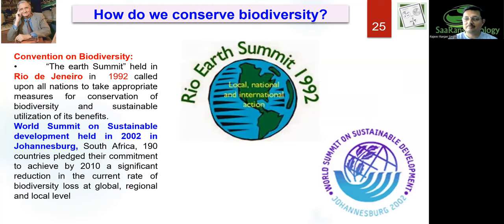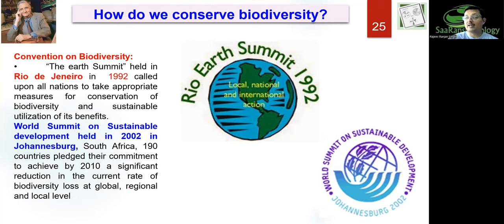Some international conventions initiated by humans include the Earth Summit held in Rio de Janeiro in 1992, which called upon all nations to take appropriate measures for conservation of biodiversity and sustainable utilization of benefits. Then the Johannesburg Summit in 2002 saw 190 countries place their commitment to achieve significant reduction in biodiversity loss by 2010. More work is still to be done, and action must be taken at the global, regional, and local levels — hence the saying: think global, act local.